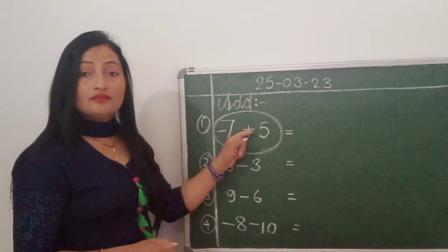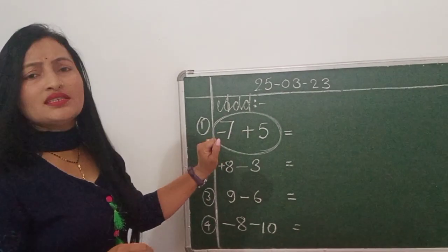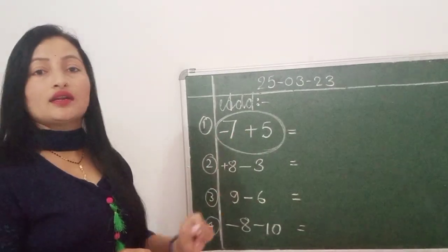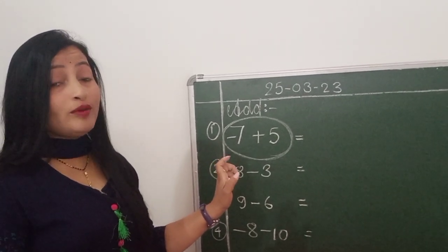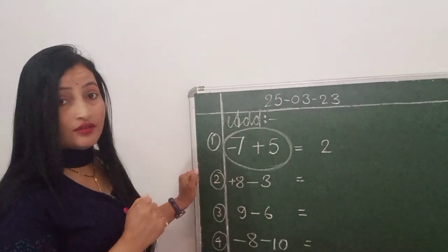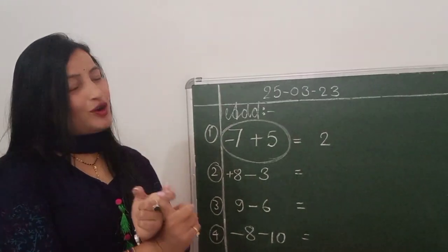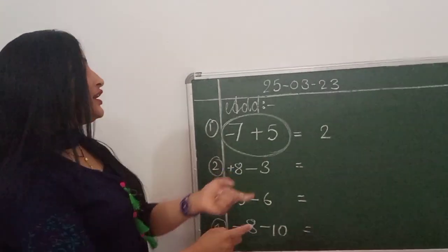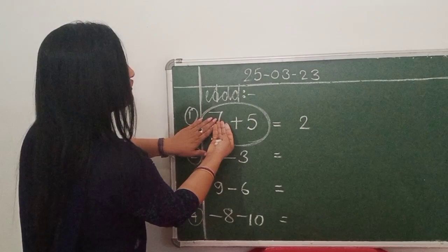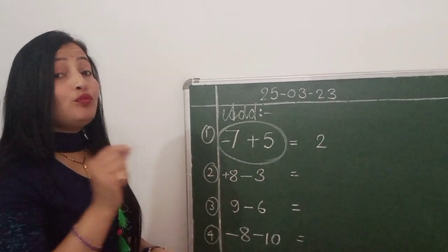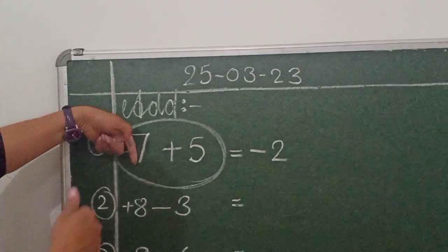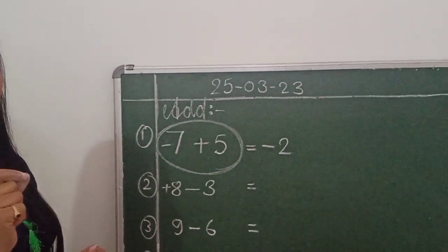Minus 7 plus 5. Think — are the signs the same? No. If the sign is not the same, then you subtract. मतलब 5 को subtract करेंगे 7 से — you will get 2. And now see: which is bigger, 5 or 7? 7 is bigger. So you will always write the sign of the bigger number. Always give the sign of the bigger number — so here the sign will be minus. Always you write the sign of the bigger number.